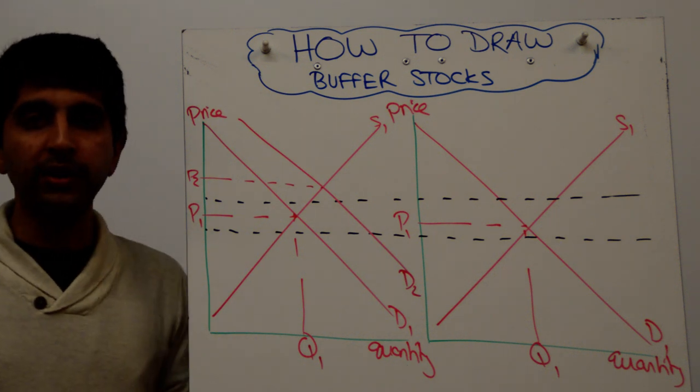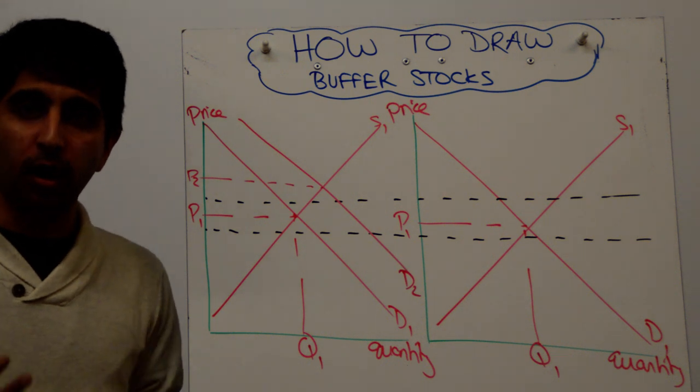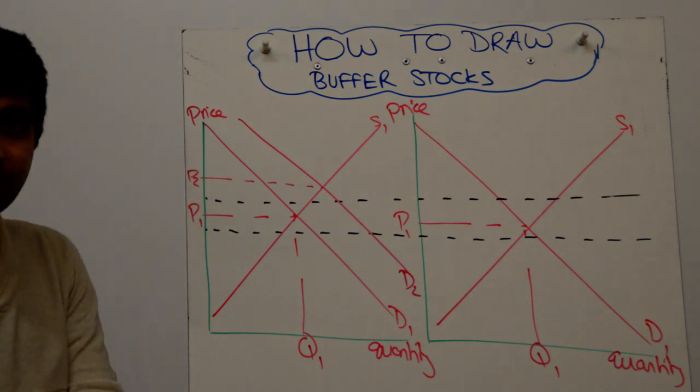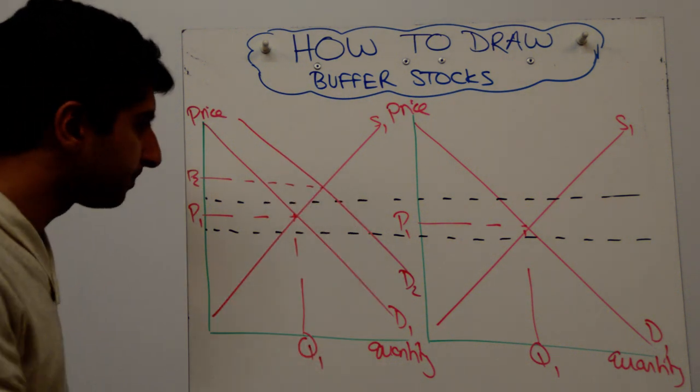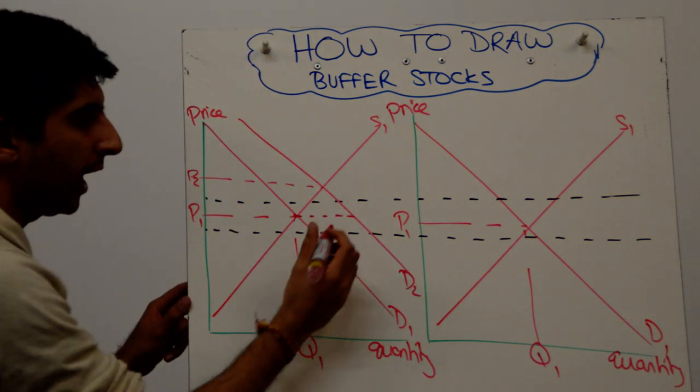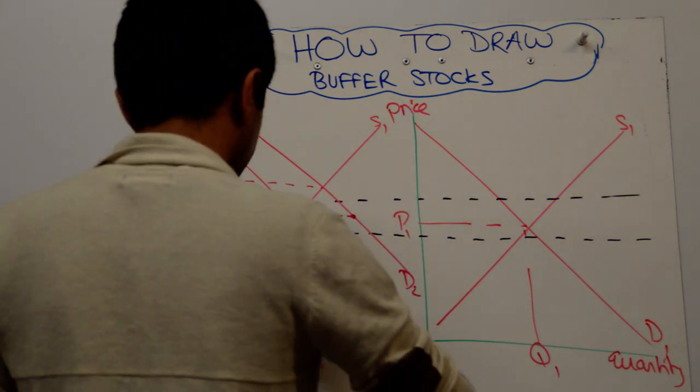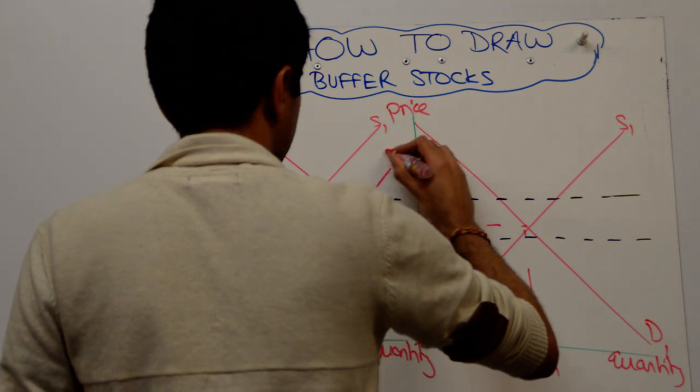So what could they do in this buffer stock scheme? Well, they could release some of the stock of primary commodity onto the market, which would shift supply to the right and take us back to P1, back into the band which is allowed. So what you would draw, take that price across and make sure your new supply curve is parallel and cuts demand through that point. So parallel shift and call that S2.